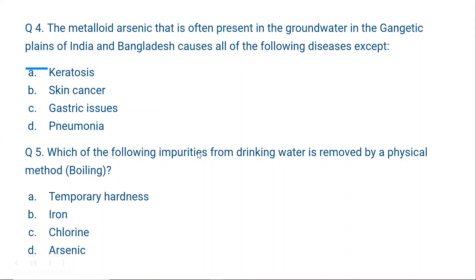Question 5: Which of the following impurities from drinking water is removed by the physical method of boiling? Options: temporary hardness, iron, fluorine, arsenic. The correct option is temporary hardness, because temporary hardness is caused by bicarbonates and carbonates of calcium and magnesium. When water is boiled, the bicarbonates convert to carbonates and form a layer, and the water can be drawn off without the hardness.